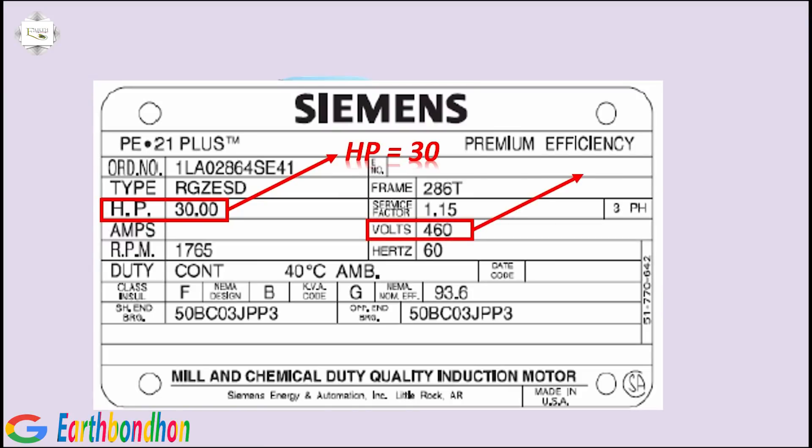3 phase induction motor volts: volts equals 460.